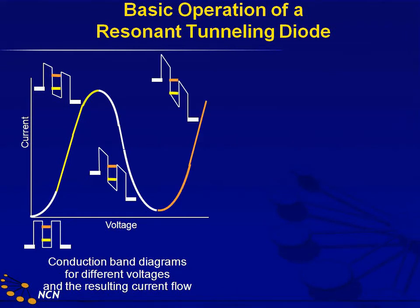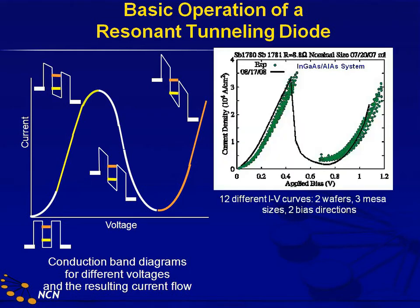Here's the Mickey Mouse description of an RTD. It's easy now to understand with the previous lectures how current increases, decreases, and increases again. And here's my punchline: these boundary conditions were of utmost importance to ultimately allow us to be predictive before experiment.